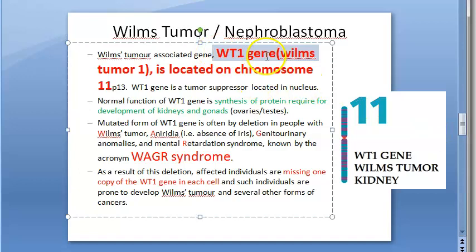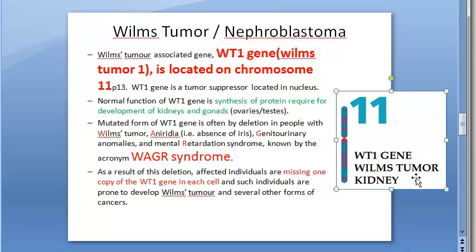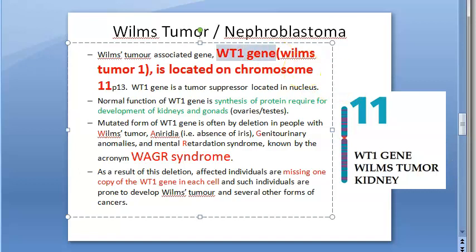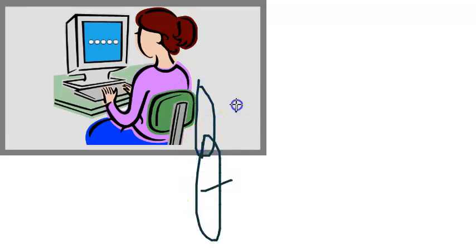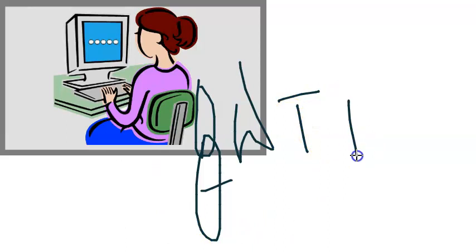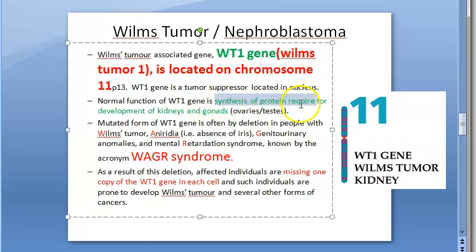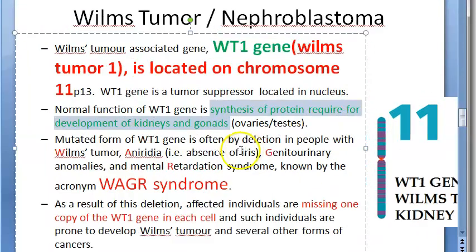Wilms tumor is caused by mutation of the Wilms tumor 1 (WT1) gene, which is located on chromosome 11. This WT1 gene is actually a tumor suppressor gene, but when mutated it leads to Wilms tumor. This gene is responsible for the synthesis of proteins required for the development of the kidney and gonads. So if this gene is affected, the person can have both kidney problems and gonadal problems.